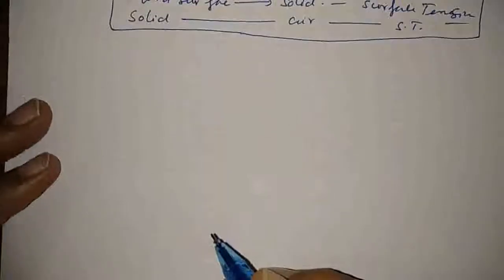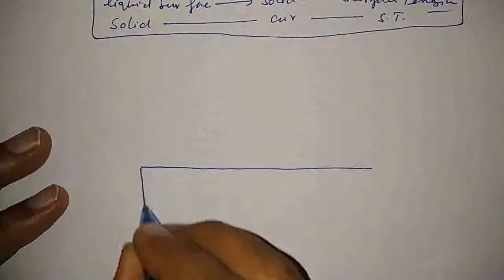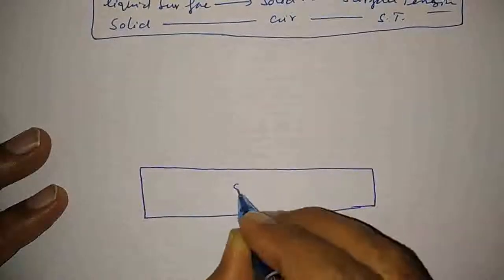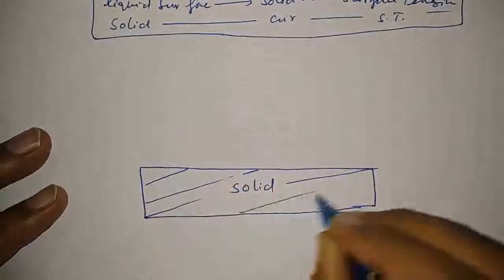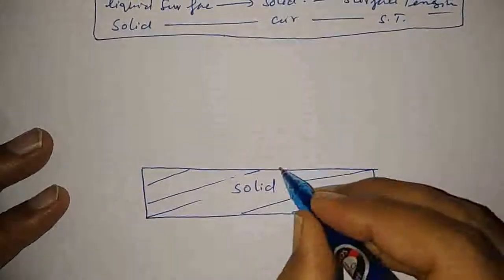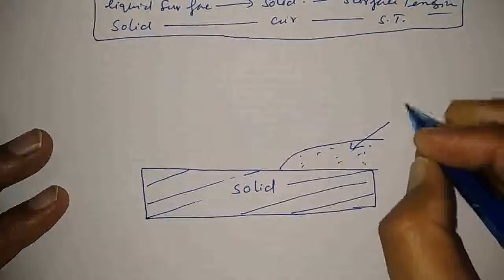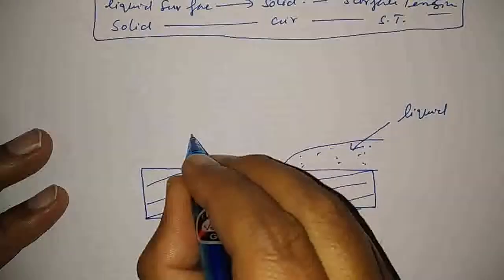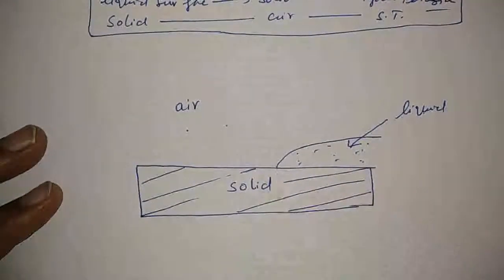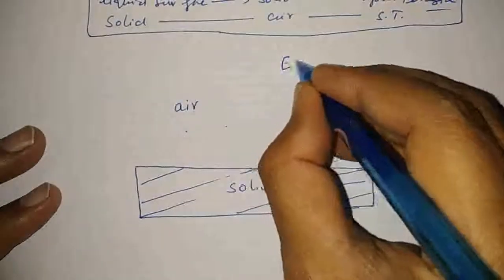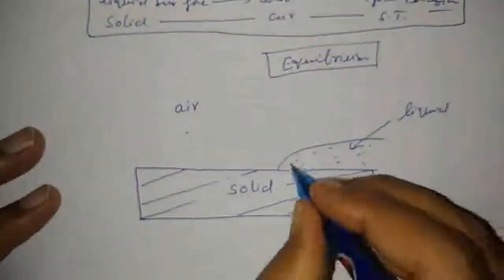And same when a solid is in contact with air, solid surfaces in contact with air also have surface tension. Surface tension exists at any two contact surfaces among all three states — either solid, liquid, or gas. So when all three surfaces come into contact, we will see what situation takes place. This situation can be clearly understood in the diagram.